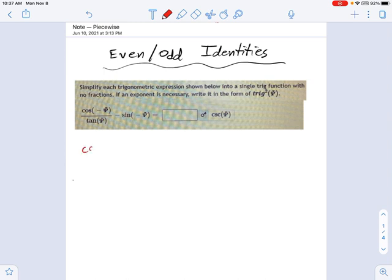Now, cosine of negative psi is just equal to cosine of psi, right? Remember, cosine is an even function. And sine of negative psi is equal to negative sine of psi, because that is an odd function.